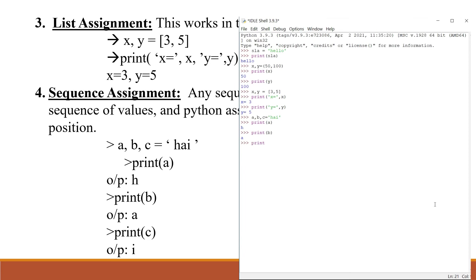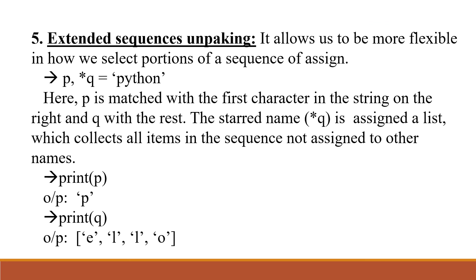Next, print c gives the output as 'i'. Next, extended sequence unpacking — it allows us to be more flexible in how we select portions of a sequence to assign. For example, if we take p, *q = 'python', here p is matched with the first character in the string on the right, and q with the rest. The star name *q is assigned a list which collects all the items in the sequence not assigned to other names.